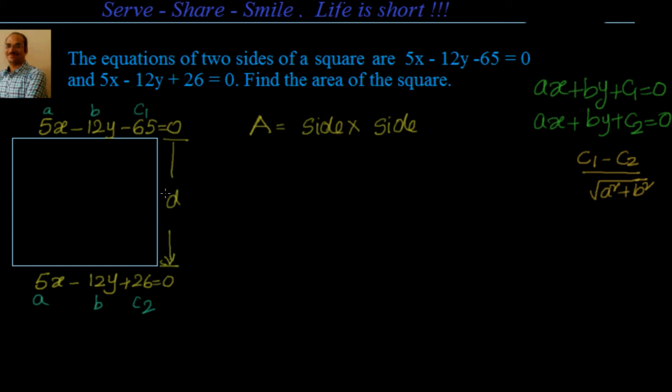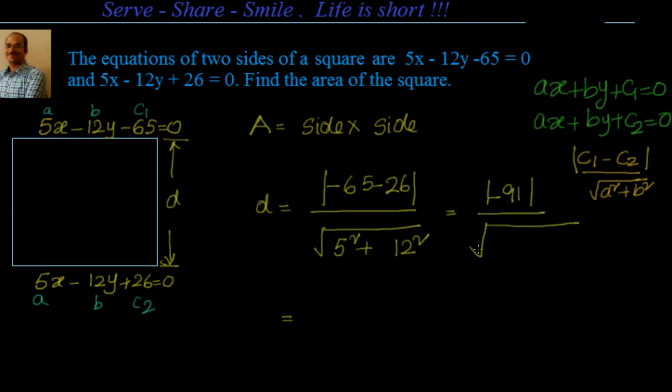Taking this as A, B, C1 and A, B, C2, the distance D between these two parallel lines is equal to C1 minus C2, that is minus 65 minus 26, mod of that, divided by square root of A square plus B square. A is 5, so 5 square plus B square is 12 square. This is equal to 65 plus 26, so mod of minus 91 divided by square root of 25 plus 144. This is equal to 91 divided by square root of 169, that's equal to 91 divided by 13 which is equal to 7.